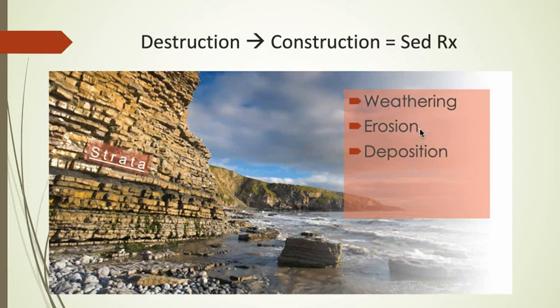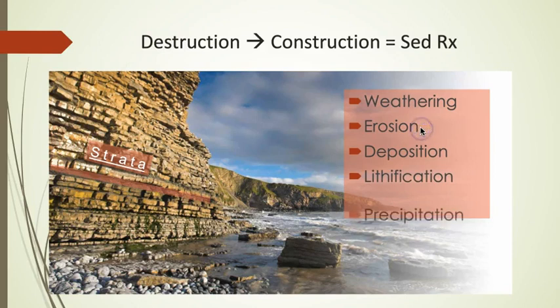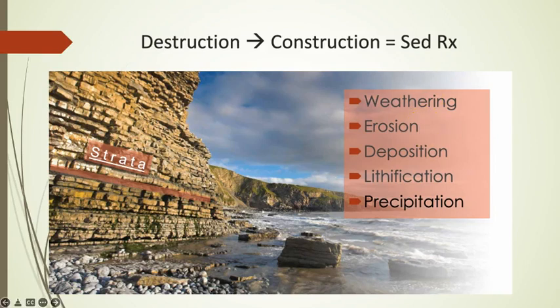Over time, the strata will be compacted and cemented into rock through a process called lithification. Sedimentary rock may also form through the process of precipitation. Precipitation is the opposite of dissolution and happens when dissolved minerals precipitate or fall out of water, forming crystals.